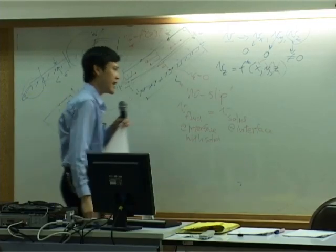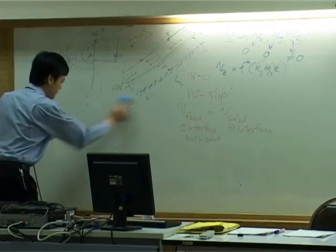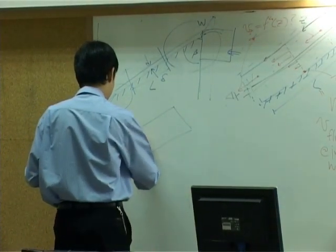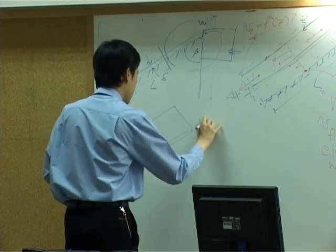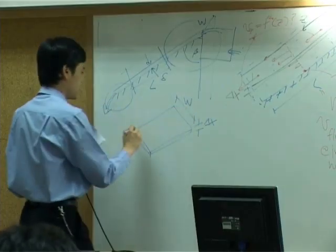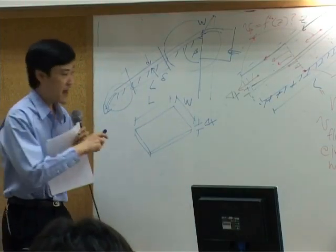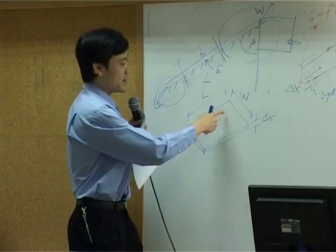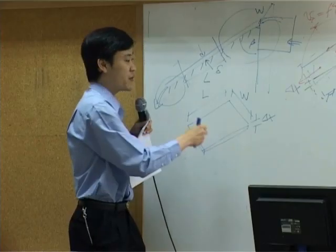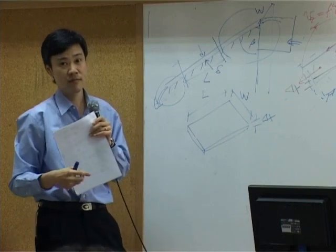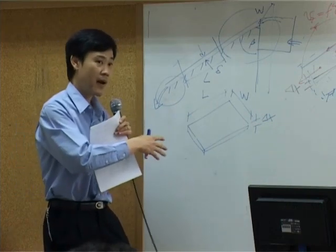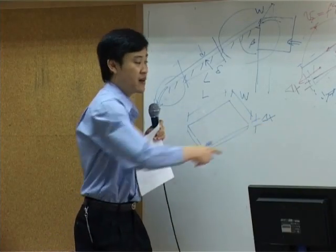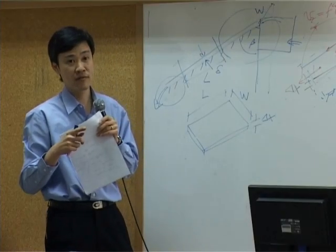We do that because velocity within the shell is supposed to be uniform. We know that velocity does not change with respect to y or z, so we can take the shell to be full extent in the y and z direction. After setting up the shell balance, you need to integrate. If your shell is thin in one direction — the x direction — the integration will take place along the x direction only.